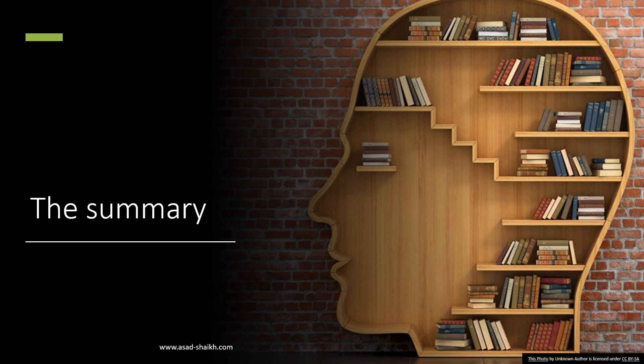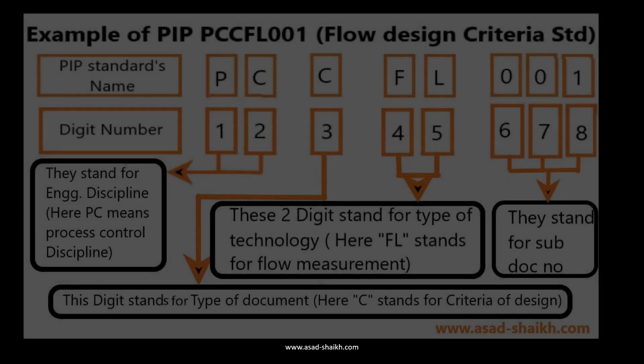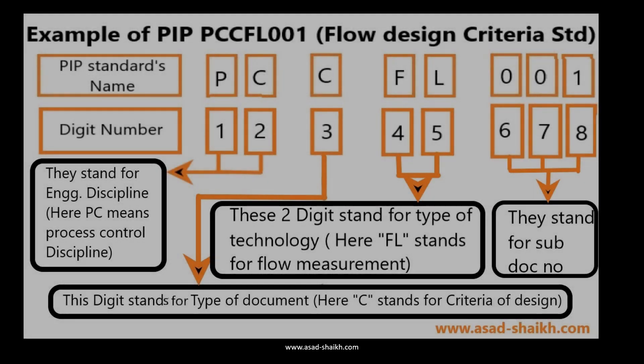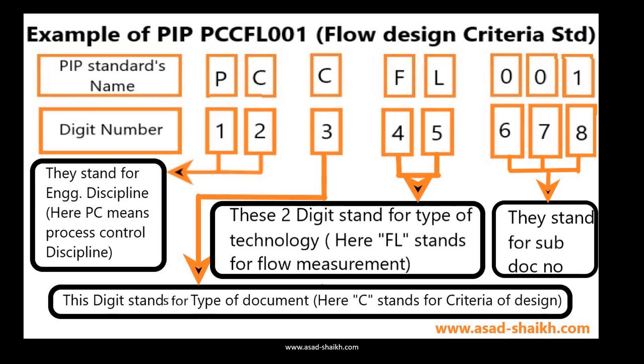To summarize: the first two digits stand for the type of engineering discipline; the third digit stands for the criteria of design or type of document; the fourth and fifth digits stand for the type of technology (flow meter, temperature, level, control valve, etc.); and the last three digits stand for the sub-document number.